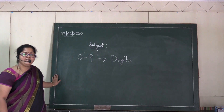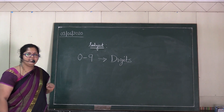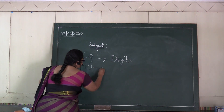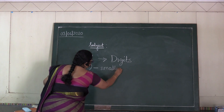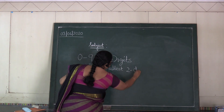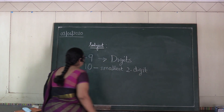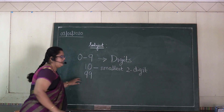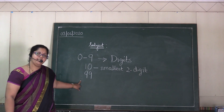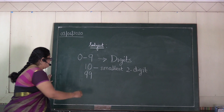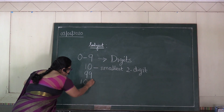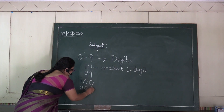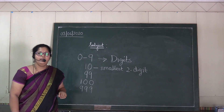Now, which is the smallest two-digit number? Very good — ten. The smallest two-digit number is ten. The biggest two-digit number? Ninety-nine. Now, the smallest three-digit number? Very good. Hundred is the smallest three-digit number, and nine hundred ninety-nine is the biggest three-digit number.